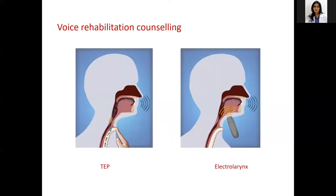When a patient is planned for total laryngectomy, pre-operative voice rehabilitation counselling is essential. The patient must be explained about various options including tracheoesophageal prosthesis and electrolarynx, along with the pros and cons of each. This also prepares the patient mentally for major physiological changes in speech, swallowing, and breathing patterns after surgery.